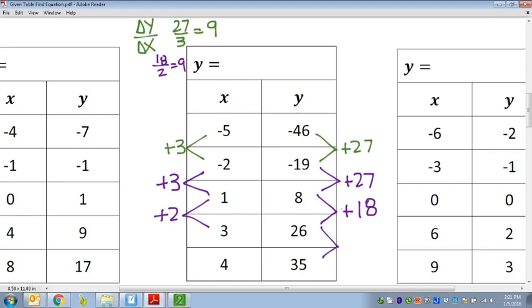Let's just check one more time. 26 to 35 is plus 9. 3 to 4 is plus 1. So 9 over 1 also equals 9. So I know that my slope is 9. So it's going to be 9x plus b.